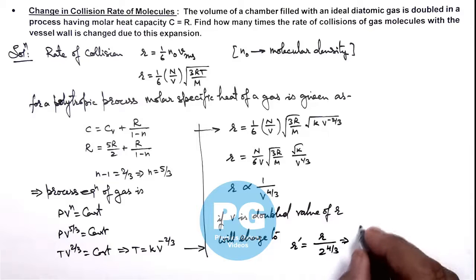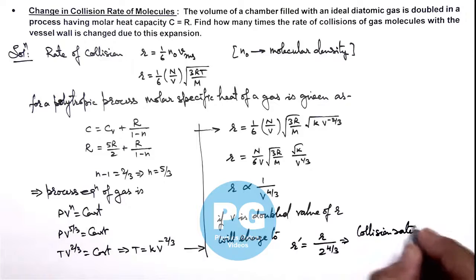This implies collision rate reduces 2 to power 4 by 3 times. That is the result of this problem.